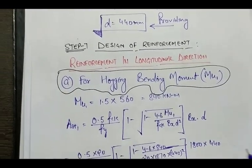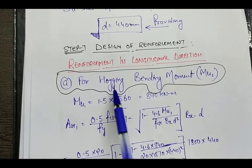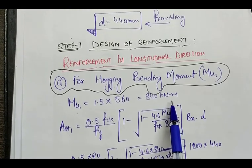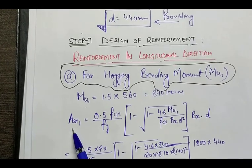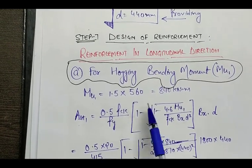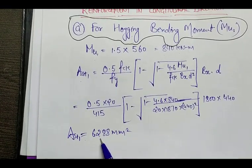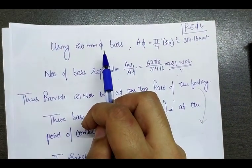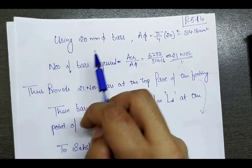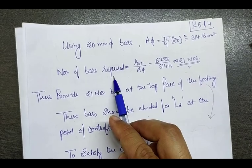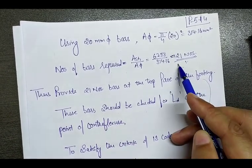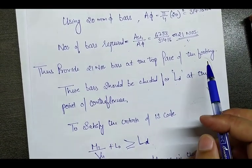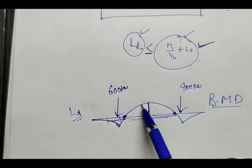The next step is to design the reinforcement. First, we design reinforcement for the maximum bending moment, which is hogging. The magnitude is 840 kN·m. The cross-sectional area of steel required is 6288 mm². We are using 20 mm diameter bars. Calculating the number of bars gives approximately 20-point-something, so we round up to 21 bars, provided at the top face of the footing.